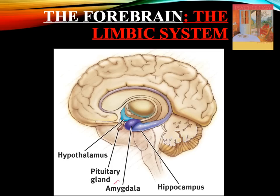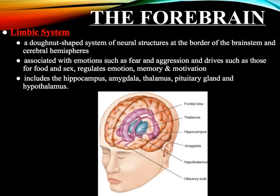The next part is the forebrain. In the forebrain, we will focus on the limbic system. The forebrain is the middle interior portion of the brain that we better know as the limbic system. The limbic system is a donut-shaped system of neural structures at the border of the brainstem and the cerebral hemispheres. It's associated with emotions such as fear and aggression, and drives such as for food and sex, and it regulates emotions, memory, and motivations. It includes the hippocampus, the amygdala, the thalamus, the pituitary gland, and the hypothalamus.